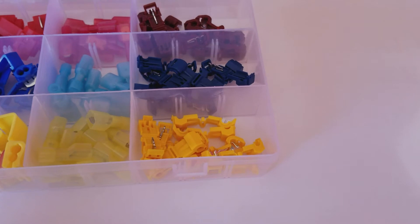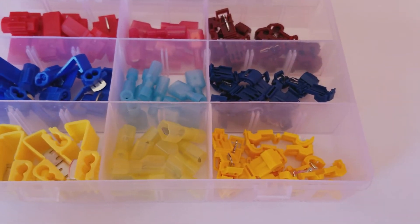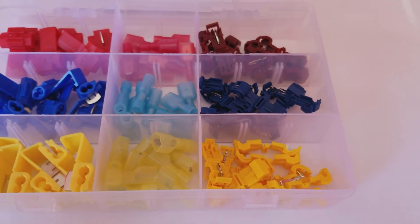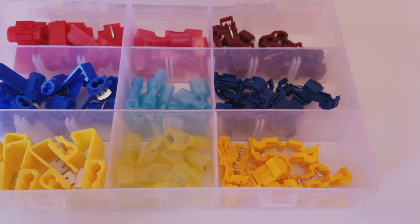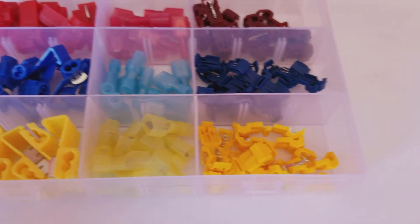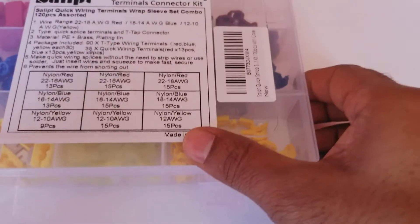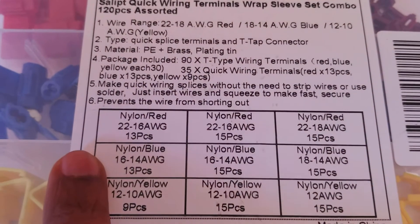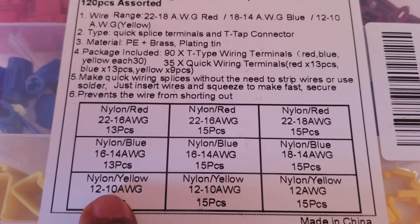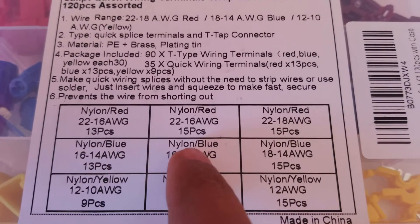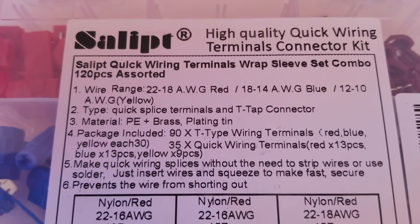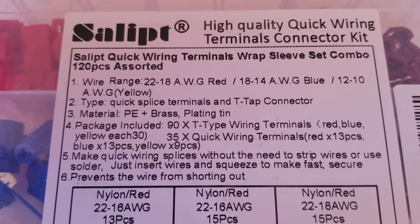This is the quick splice solderless terminals and t-tap electrical connector kit. It comes with 120 pieces with the case, and as you can see, these are the types it comes with, the connectors, the color, and all of that, the wire range and material.